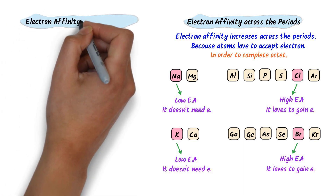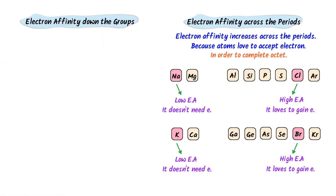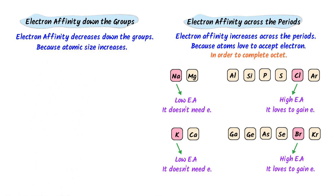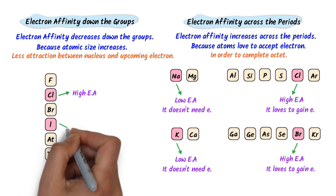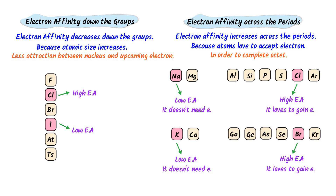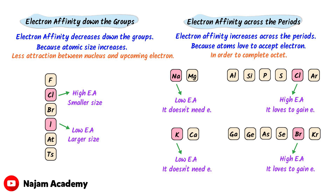We will now learn trends of electron affinity down the group. Remember that electron affinity decreases down the group or becomes less negative as you move from top to bottom. Down the group, the size of atoms increases, due to which the attraction between the nucleus and the incoming electron is weaker. For example, in group 7, chlorine has more negative electron affinity than iodine because chlorine has smaller size and can easily attract an incoming electron, while iodine has larger size and cannot. Therefore, electron affinity decreases down the group and increases across the period.